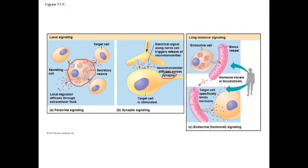In long-distance signaling, we have cells called endocrine cells or endocrine glands that release chemicals called hormones. These hormones are released into the bloodstream. Since they're released into the bloodstream, they travel throughout the entire body and cause responses in their target cells.